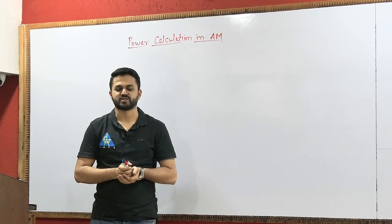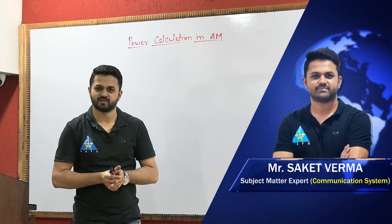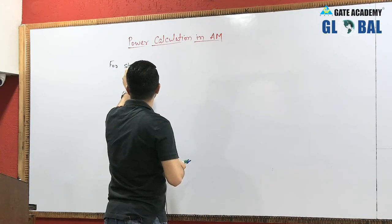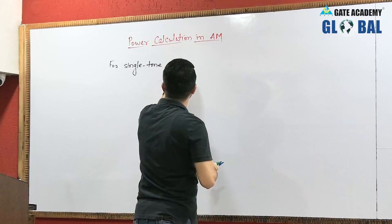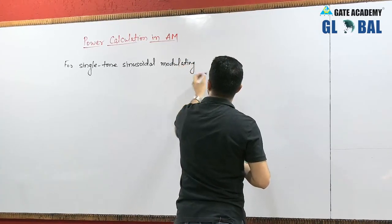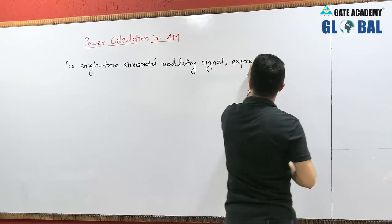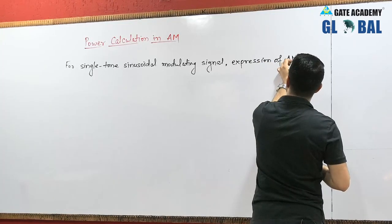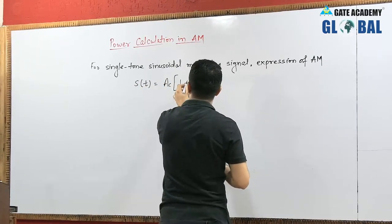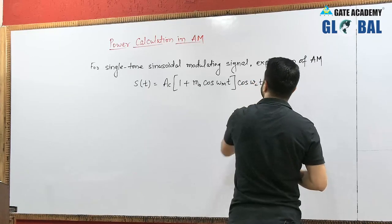Our next topic is power calculation in case of AM. We know that the expression of AM signal for single-tone sinusoidal modulating signal is given by S(t) = AC(1 + MA·cos(ωm·t))·cos(ωc·t).